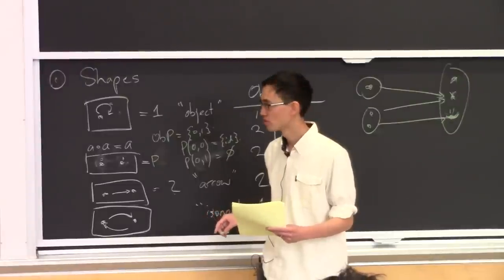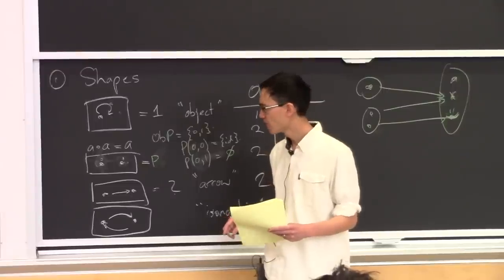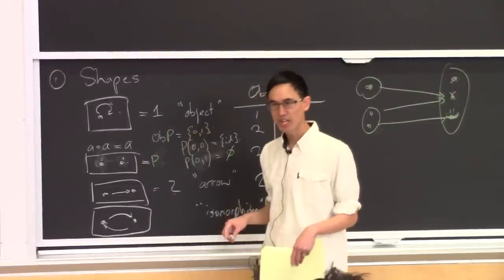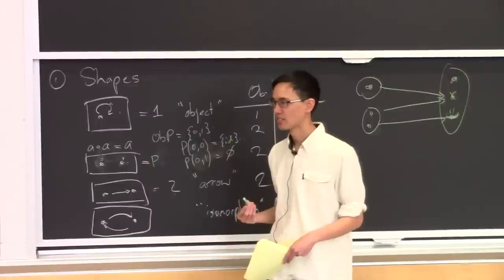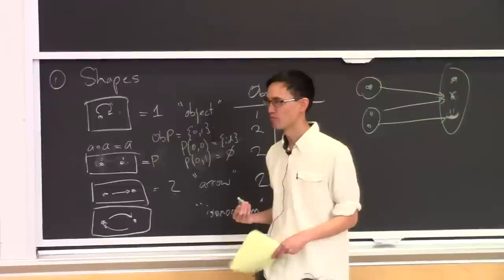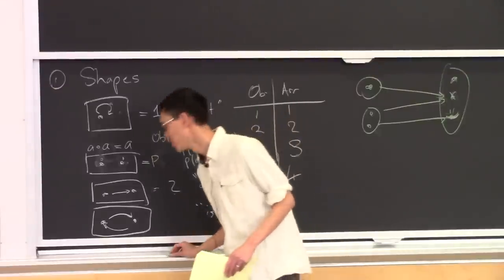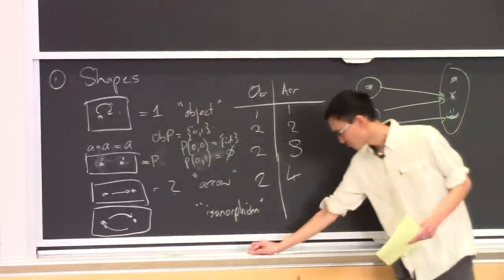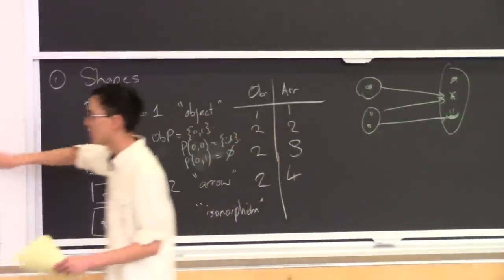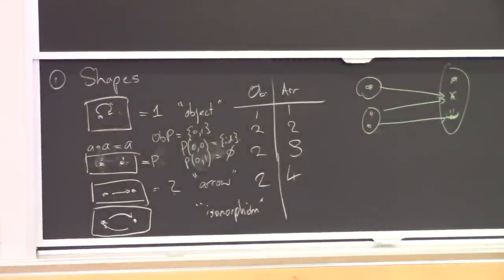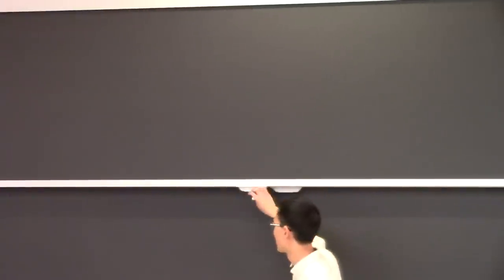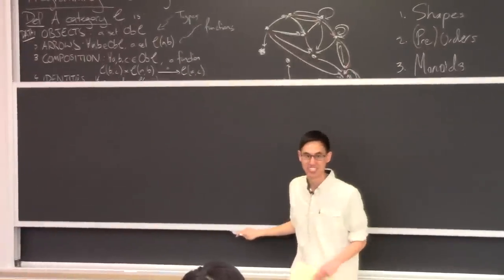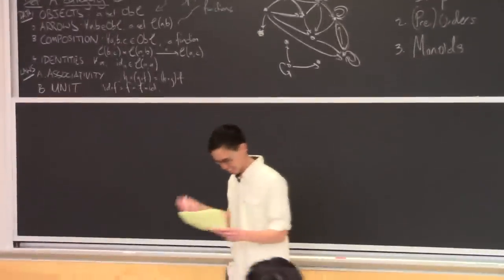There are names for the collection of all morphisms, none in common use — and I don't think we'll need a notation for that. It seems more useful to break them up into all the hom sets that explicitly declare the source and target. There is a nice category you can draw which captures the essence of being a category, with an object representing the collection of all morphisms, but let's not get into that.